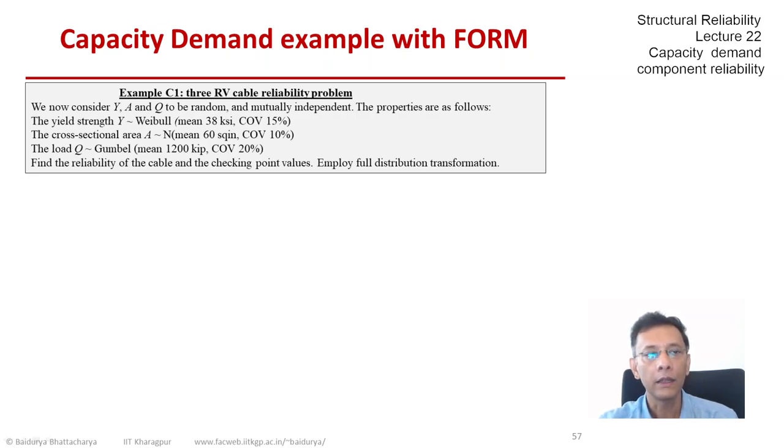Earlier in the last one or two examples, we fixed Q at the mean value 1200 kip. Now Q is a Gumbel random variable. We no longer wish to use the second moment transformation. We lose probabilistic information if the variables are not normal. So here we would like to employ the full distribution transformation.